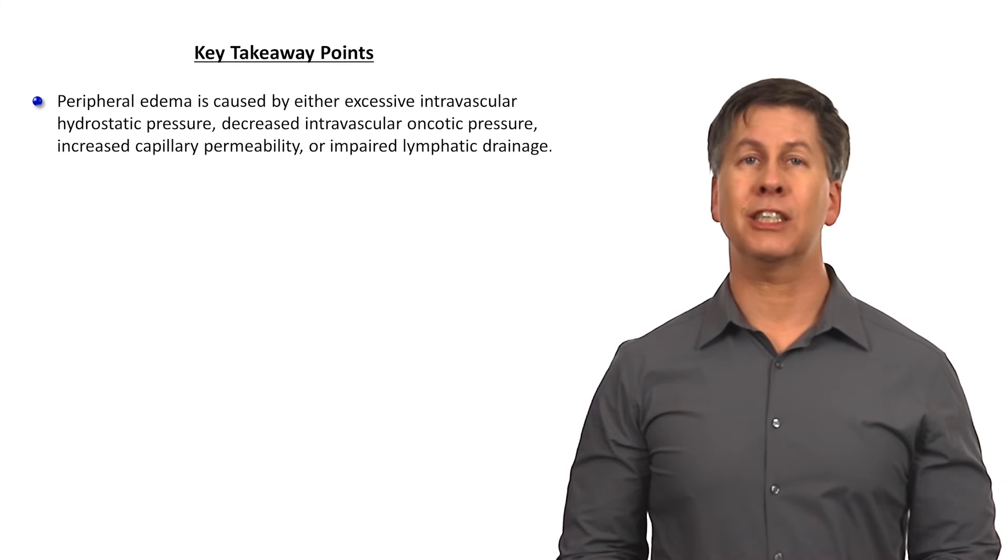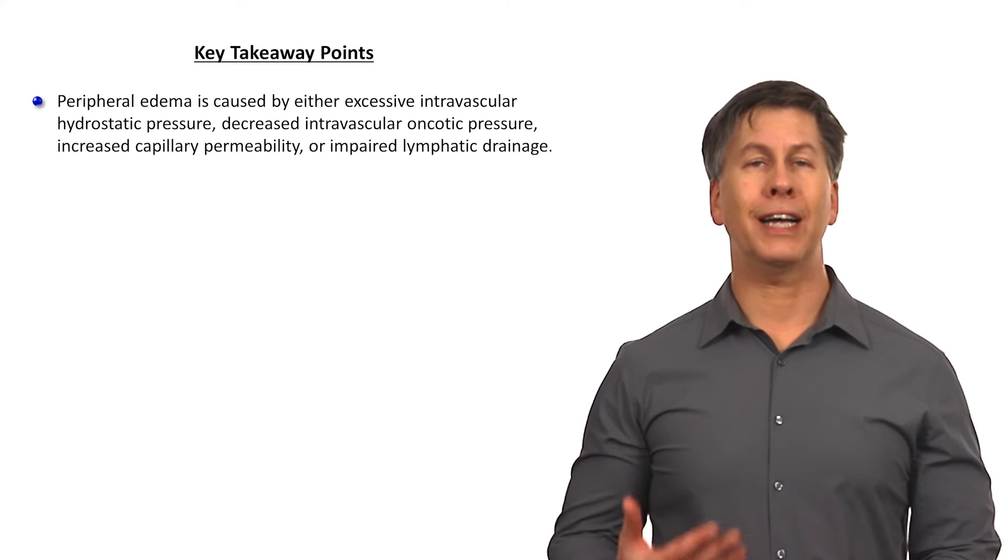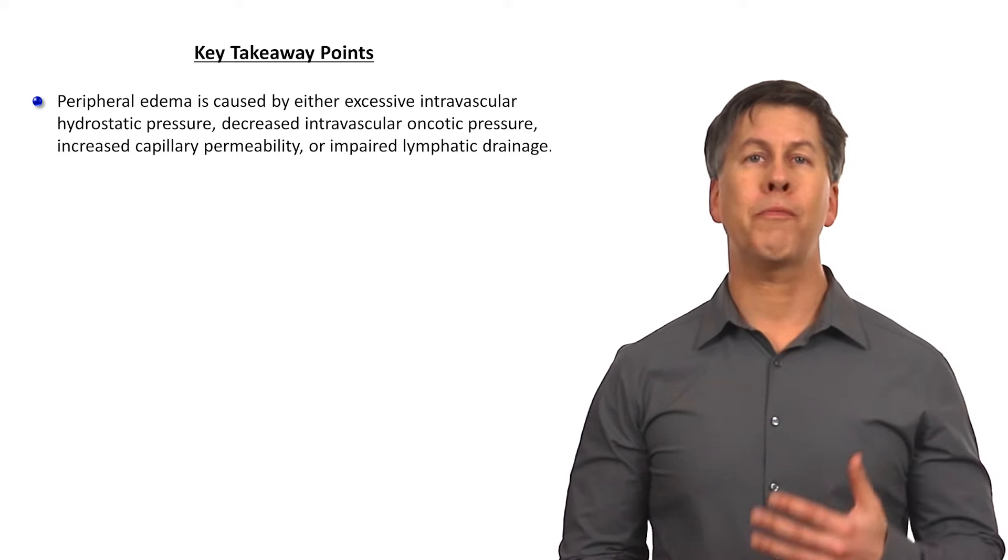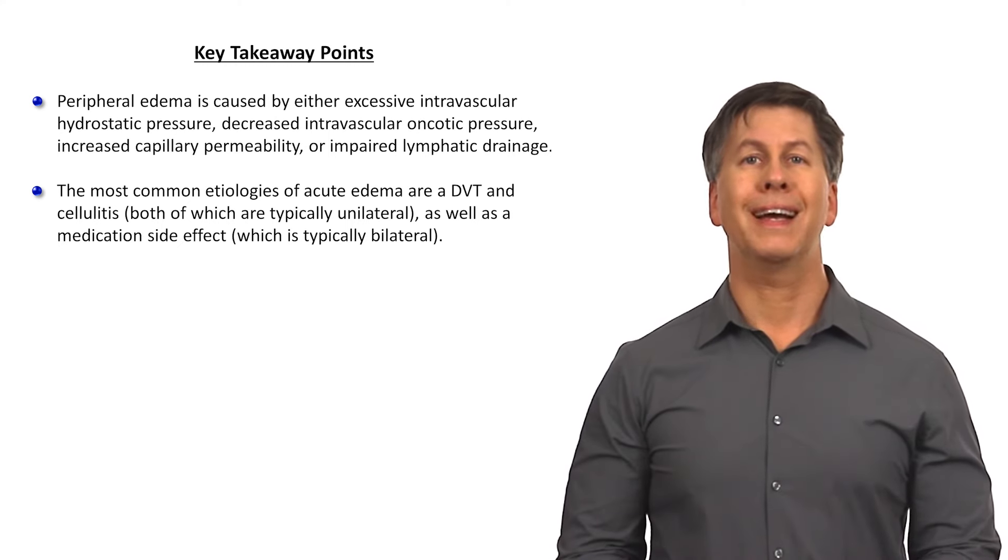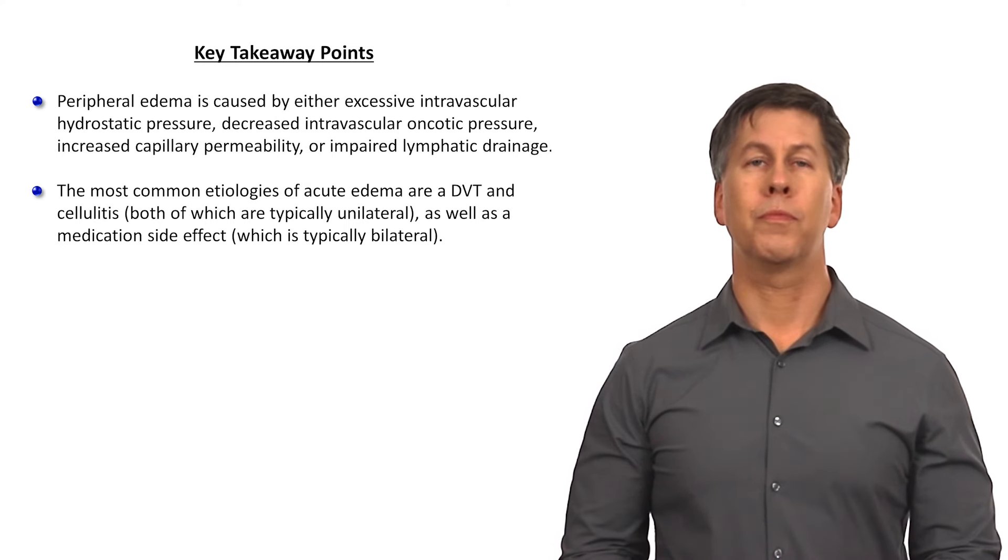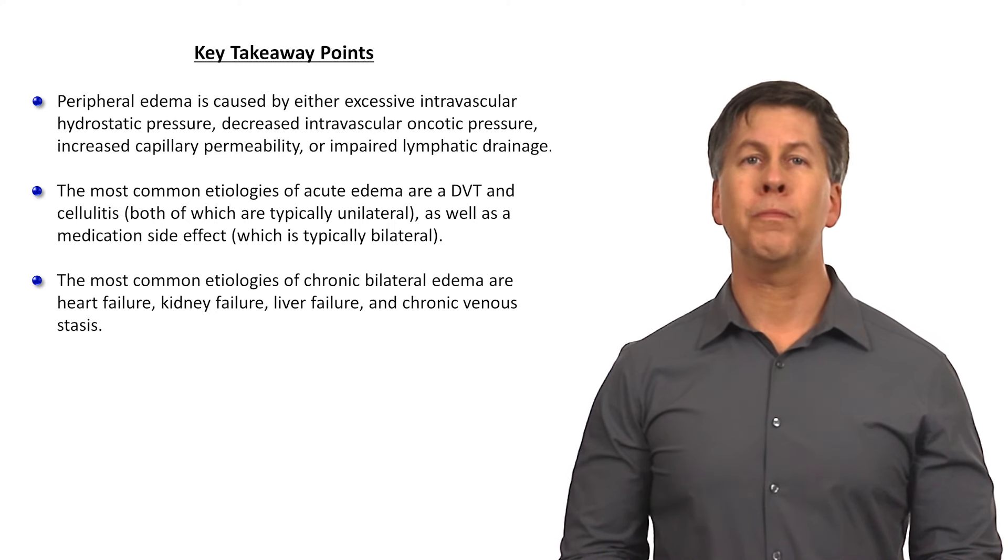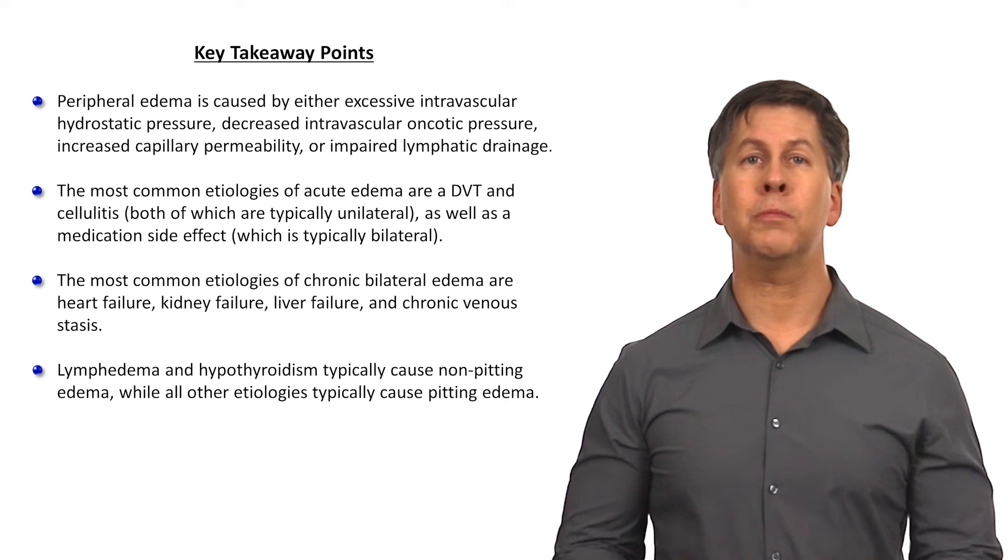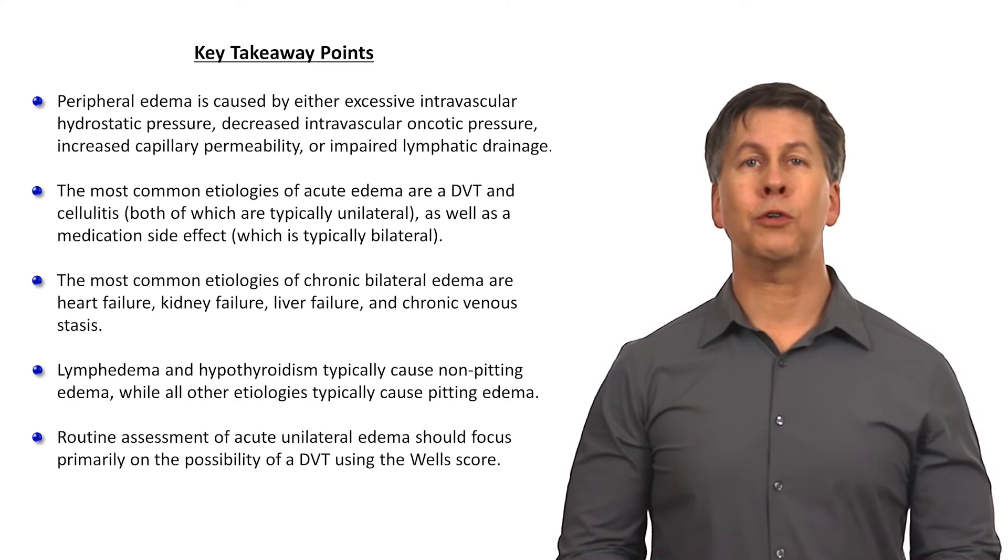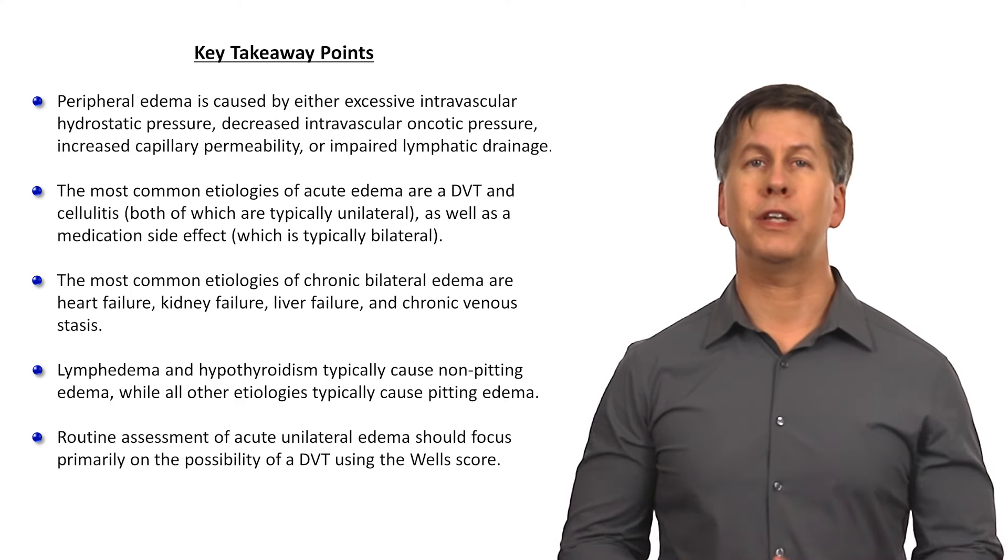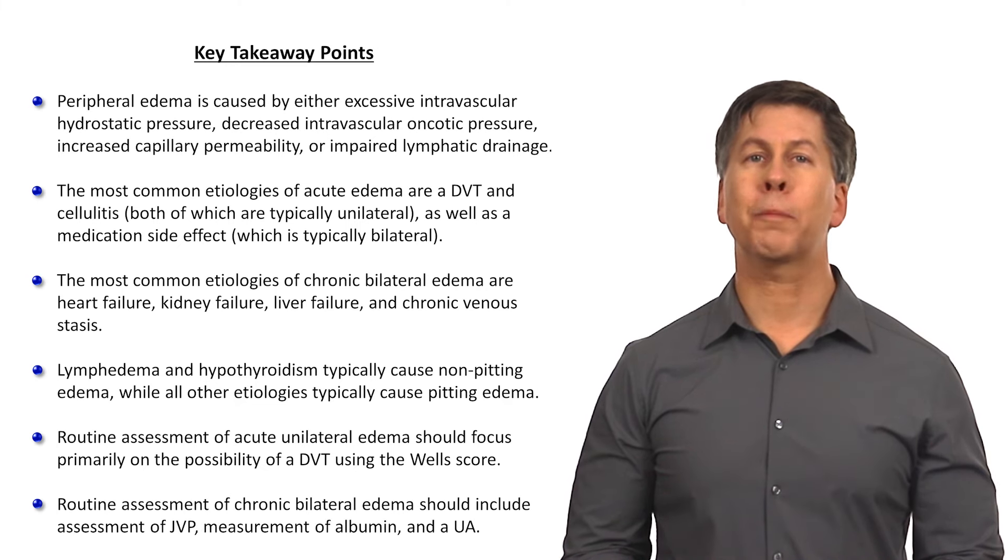That's it for peripheral edema. Key takeaway points for this topic: Peripheral edema is caused by either excessive intravascular hydrostatic pressure, decreased intravascular oncotic pressure, increased capillary permeability, or impaired lymphatic drainage. The most common etiologies of acute edema are a DVT and cellulitis, both of which are typically unilateral, as well as medication side effect, which is typically bilateral. The most common etiologies of chronic bilateral edema are heart failure, kidney failure, liver failure, and chronic venous stasis. Lymphedema and hypothyroidism typically cause non-pitting edema, while all other etiologies typically cause pitting edema. The routine assessment of acute unilateral edema should focus primarily on the possibility of a DVT using the Wells score for DVT. And last, the routine assessment of chronic bilateral edema should include assessment of JVP, measurement of albumin, and a urinalysis.